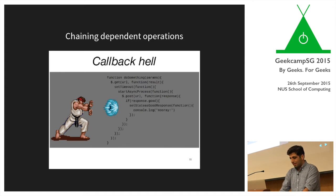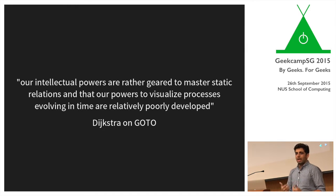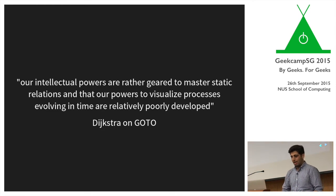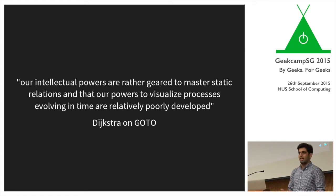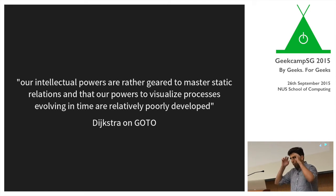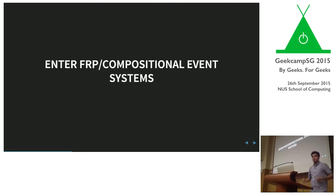Here's a quote from Dijkstra, who says that as humans we are geared towards mastering or visualizing static relations rather than dynamic ones over time. He's talking about the go-to statement, which redirects logic all over the place, and arguing that it's very hard to read as programmers. It's hard to visualize the flow of your application when logic branches go everywhere. And that's where FRP, or compositional event systems, comes in — that's the problem they're trying to solve.